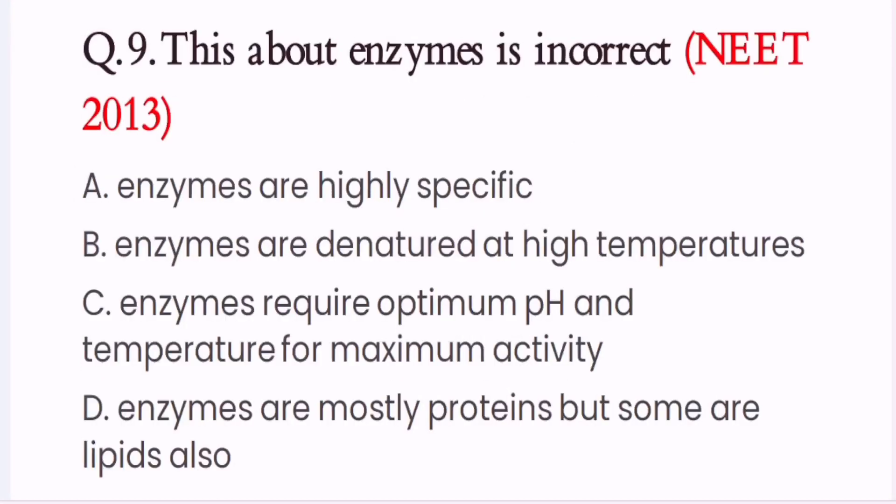Question 9. This about enzymes is incorrect. A. Enzymes are highly specific. B. Enzymes are denatured at high temperatures. C. Enzymes require optimum pH and temperature for maximum activity. D. Enzymes are mostly protein but some are lipids also. So here the correct option is D. Enzymes are mostly proteins but some are lipids also.